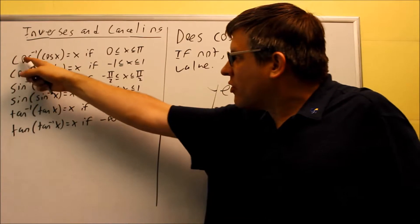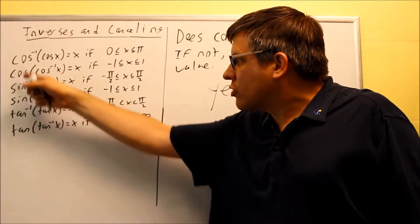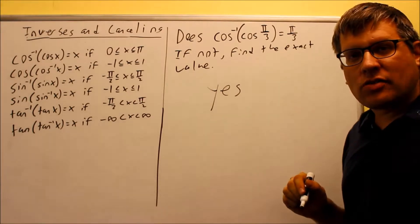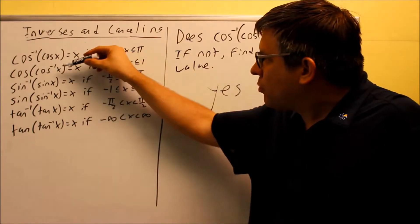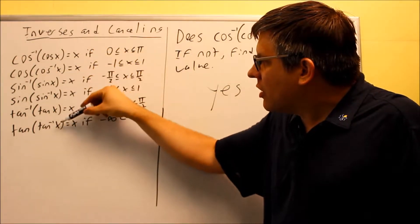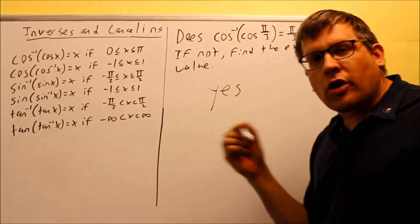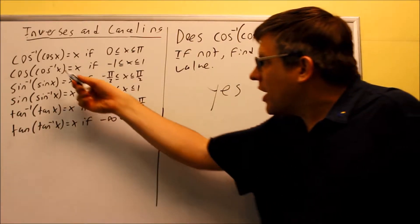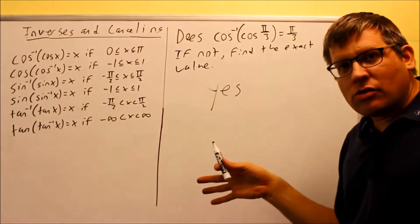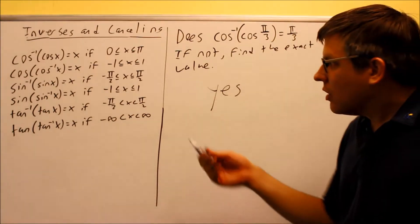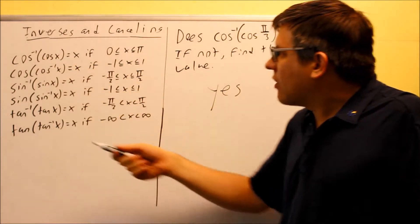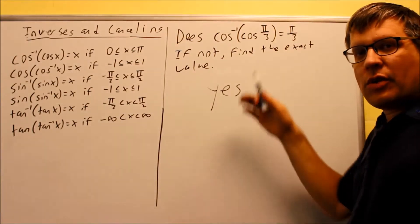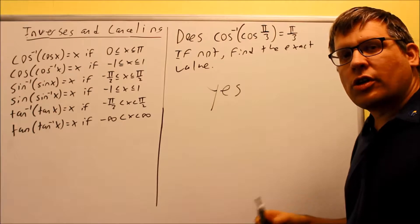This really only applies if you've got the inverse trig function on the outside — that's when you may or may not have to find the exact value. For the other ones where you've got the inverse on the inside, that goes back to the regular domain, and if it doesn't fit the domain of the inverse, then you can't do it and that's the end of the problem. For these with inverses on the outside, it's either going to equal the number on the inside, or if not, we have to go through the reference angle steps.